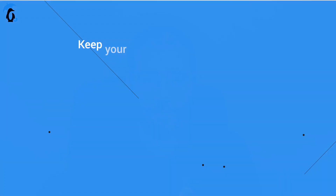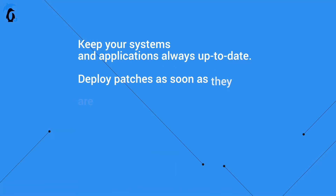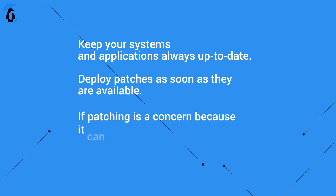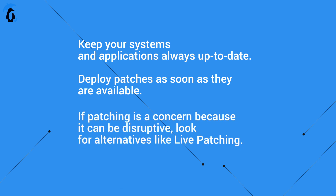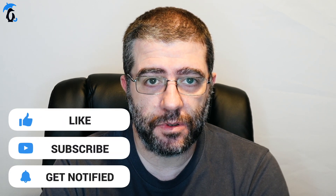This concludes our look at the importance of CVEs. The best approach, when in doubt, is always to keep your systems and applications up to date. Deploying patches as soon as they are available is always a good choice. If patching is a concern because it can be disruptive, look for alternatives like live patching, which can provide the same security without the associated downtime. If you like this content, hit the like button, subscribe to receive notifications of new videos being available, and leave your comments below.